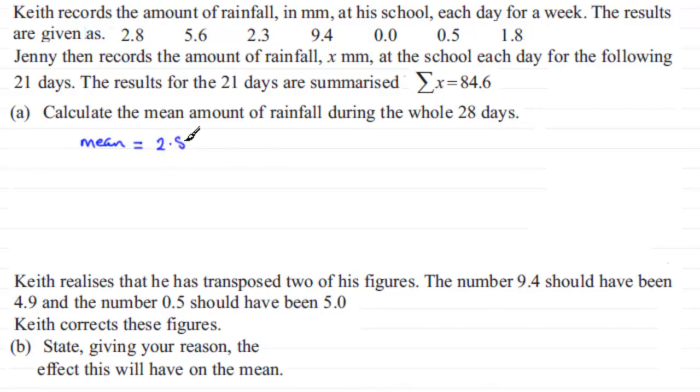Well I know the rainfall for the first week, it'll just be the total of these values here, so we'll just put those down: 2.8 + 5.6 + 2.3 + 9.4, do bear with me on this, + 0.5 + 1.5 + 1.8. Well that's the sum for the total rainfall for the first week. We've then got to add it to the total for the next 21 days, so we know that's going to be + 84.6, and we divide all of this total rainfall then by the number of days which is 28.